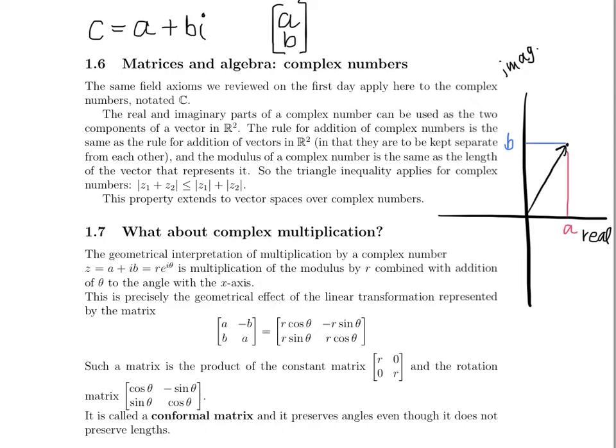Here's the a component, or the real component, we go over a units. And then the plus bi is represented by going upward b units, the imaginary coefficient. Here's our point ab, which in the complex plane represents a plus bi. And here's the vector from the origin to that point.